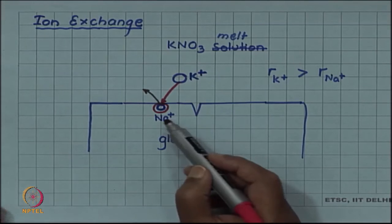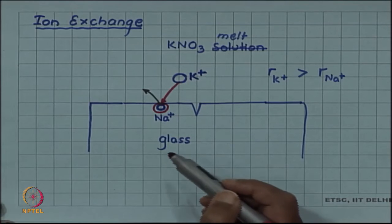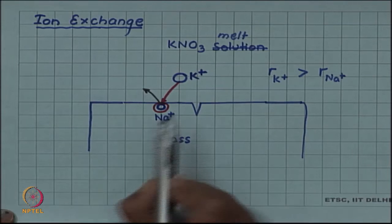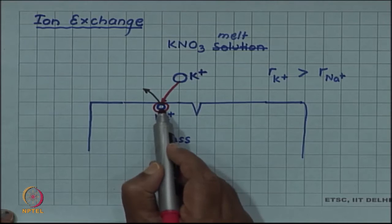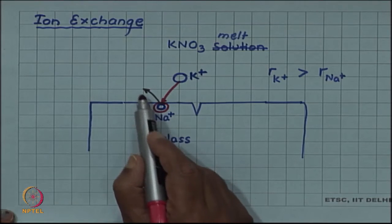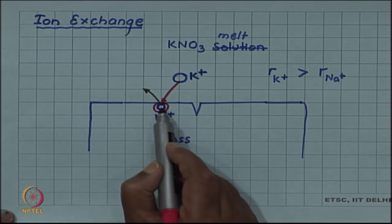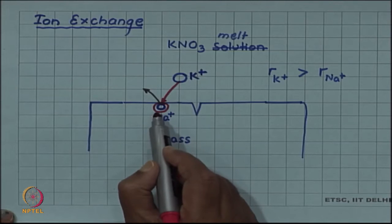The sodium ion is replaced by the potassium ion, but since sodium ion was a smaller ion, it left a smaller gap and that gap is now being filled by a larger potassium ion.